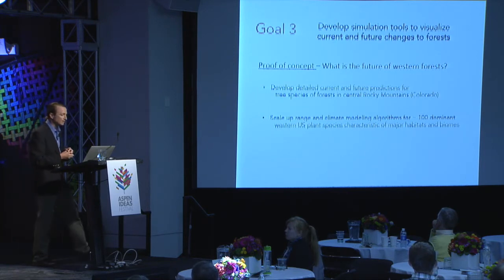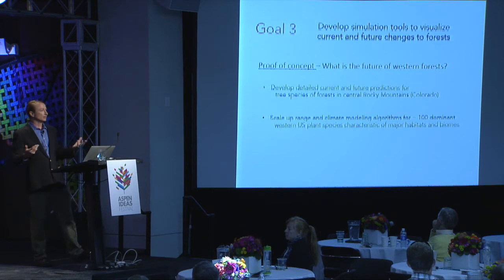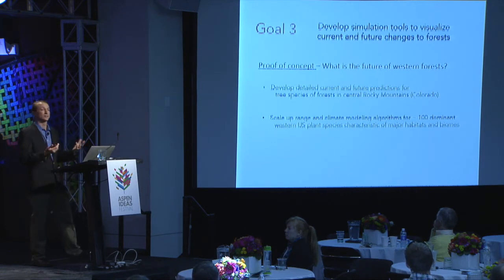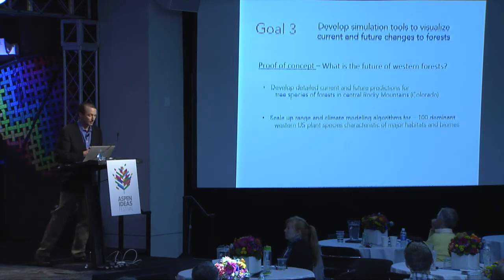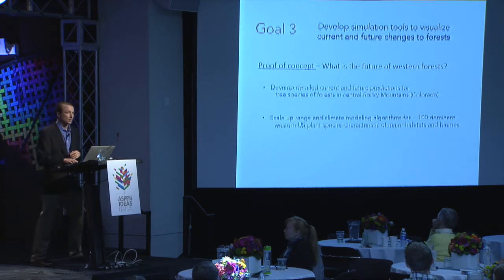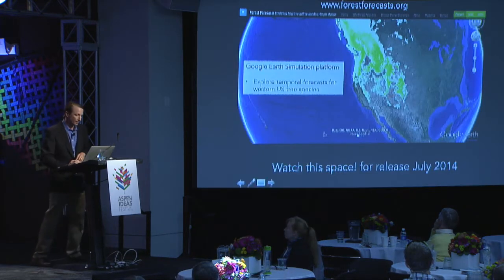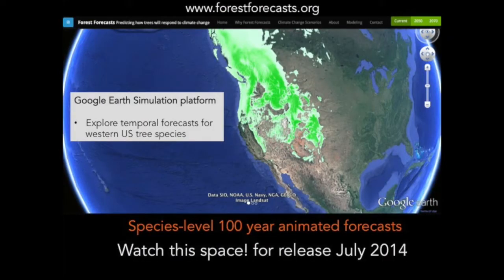The third goal is to develop simulation tools to allow anybody to go in and visualize what these data and forecasts are telling us. The proof of concept: can we focus around Aspen and the Western United States to make some forecasts of what's going to happen to our forests? We'll start with some dominant species around here, then scale up to about 100 dominant species across the West. Watch this space for early release in 2014 at www.forestforecast.org. One can access these tools and visualize changes in ranges through time — zooming in within Google Earth to your location, your backyard, to watch how specific species may be changing.